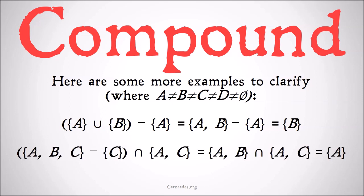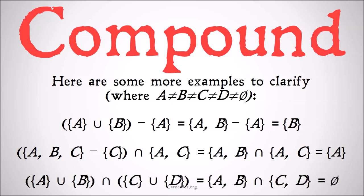Then we have the intersection of the difference between the class of A, B, and C and the class of C, intersected with the class of A and C. We do what's in the parentheses first and take the C out of that first class to just get the class of A and B. We have that intersected with the class of A and C, and we're left with just A because that's the only thing they have in common.